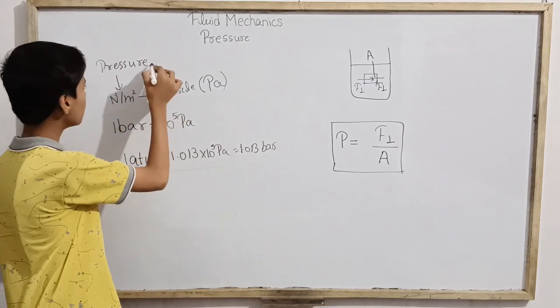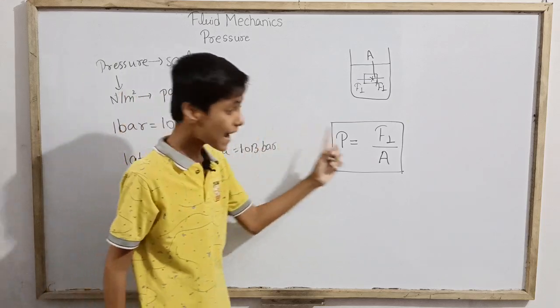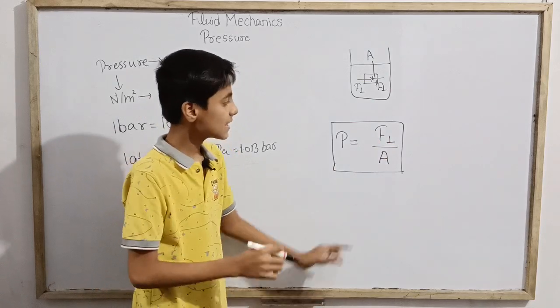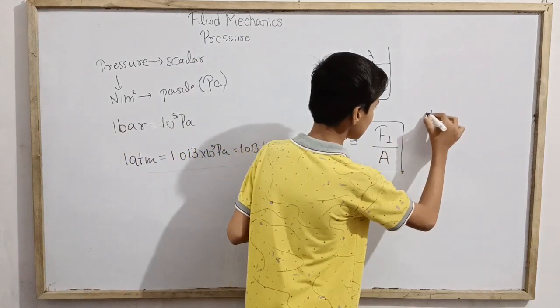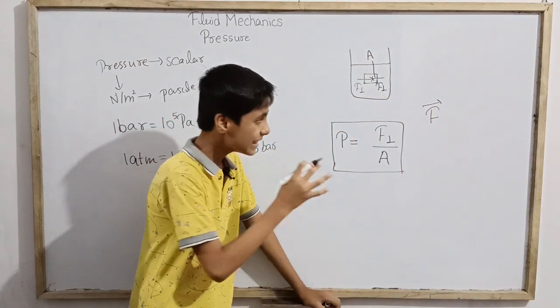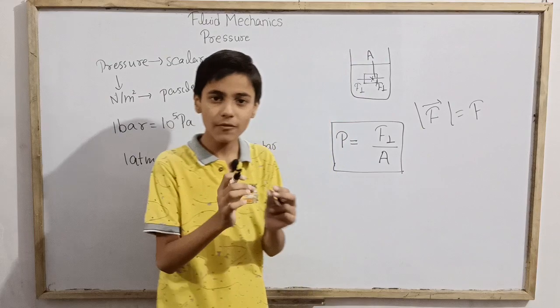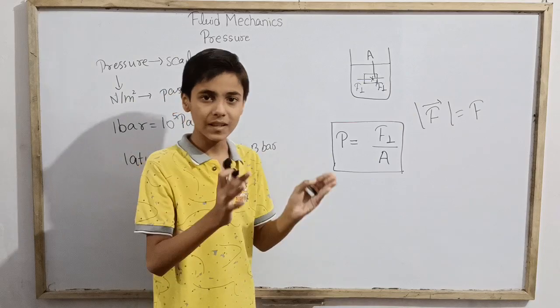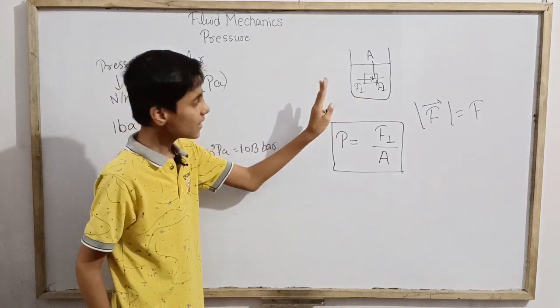These are some common units. Now, is pressure a vector? Instead it is a scalar quantity, despite force being a vector quantity. The reason we can call pressure a scalar is because if we actually see, we don't put the force vector here in this formula. We put magnitude of the force vector, which is just a scalar quantity. So pressure becomes a scalar quantity.